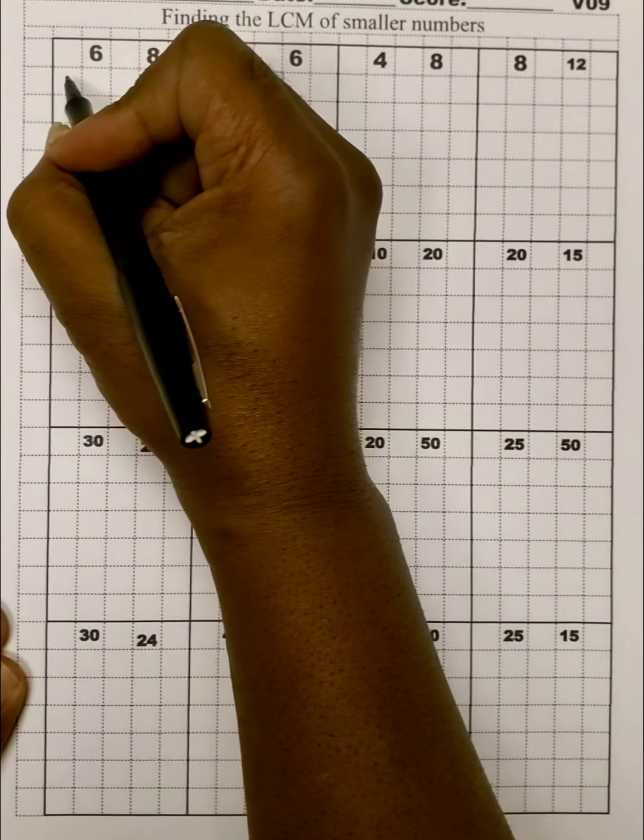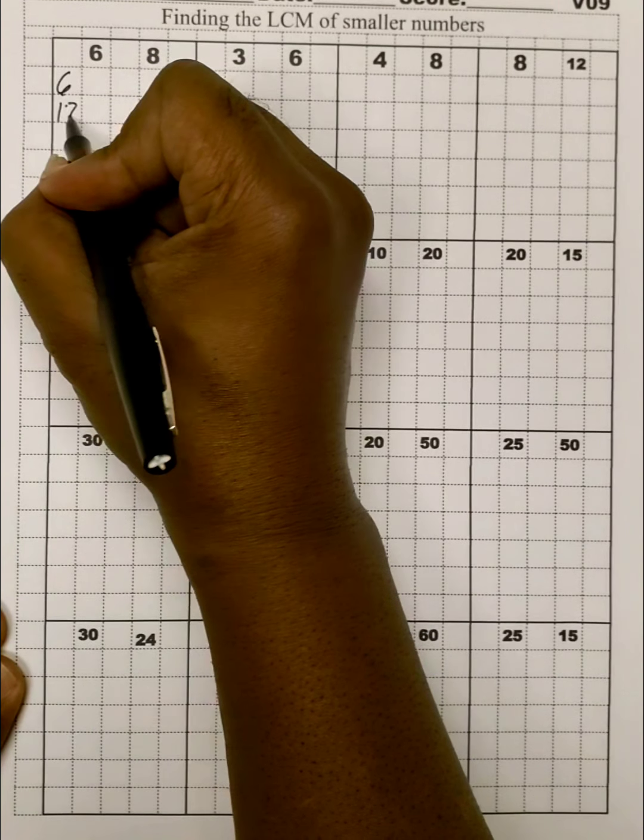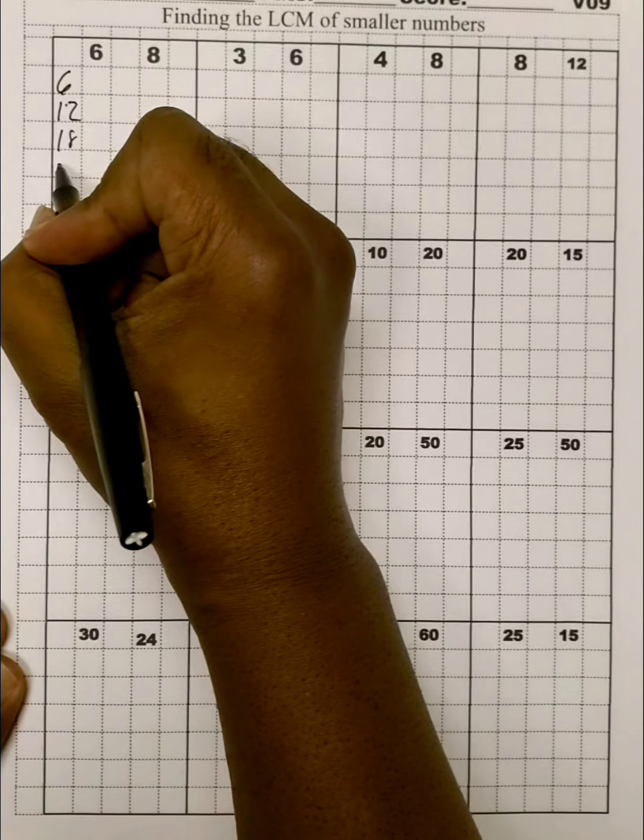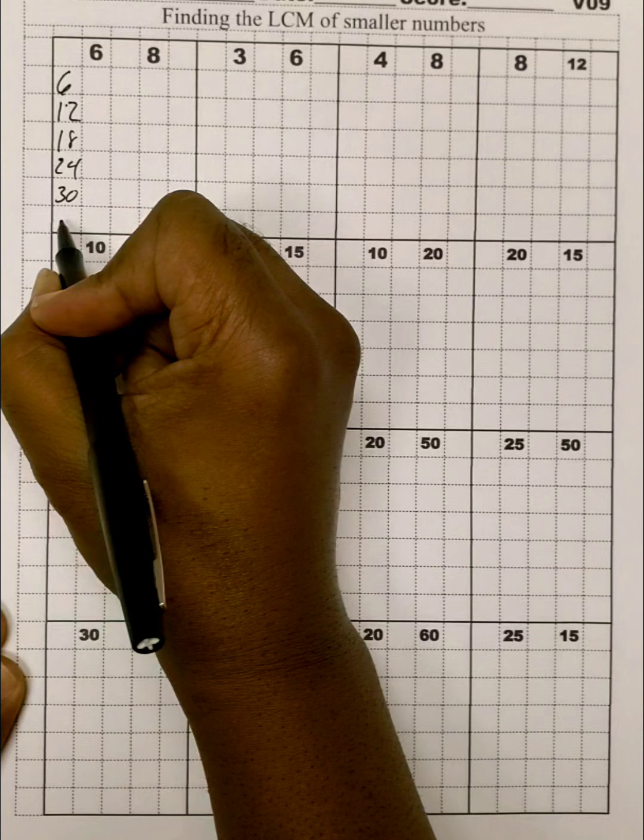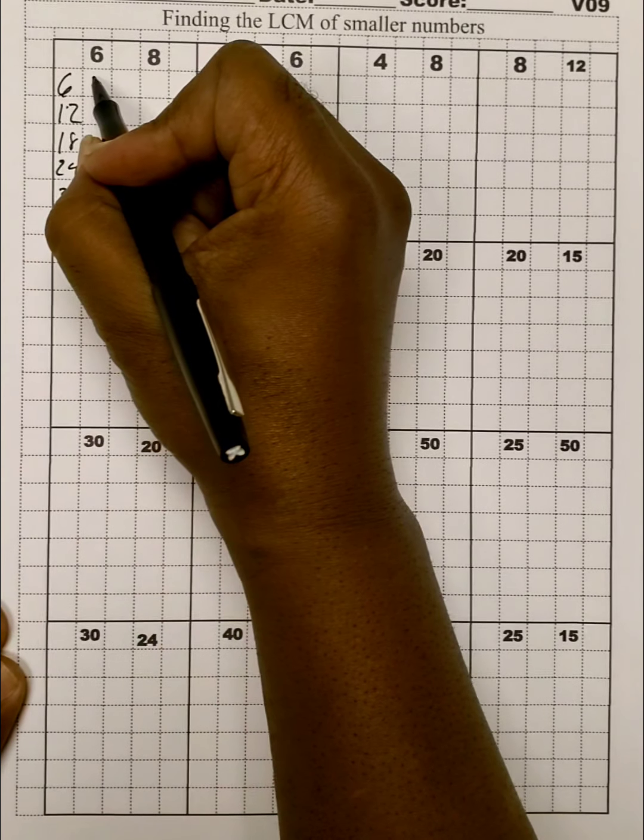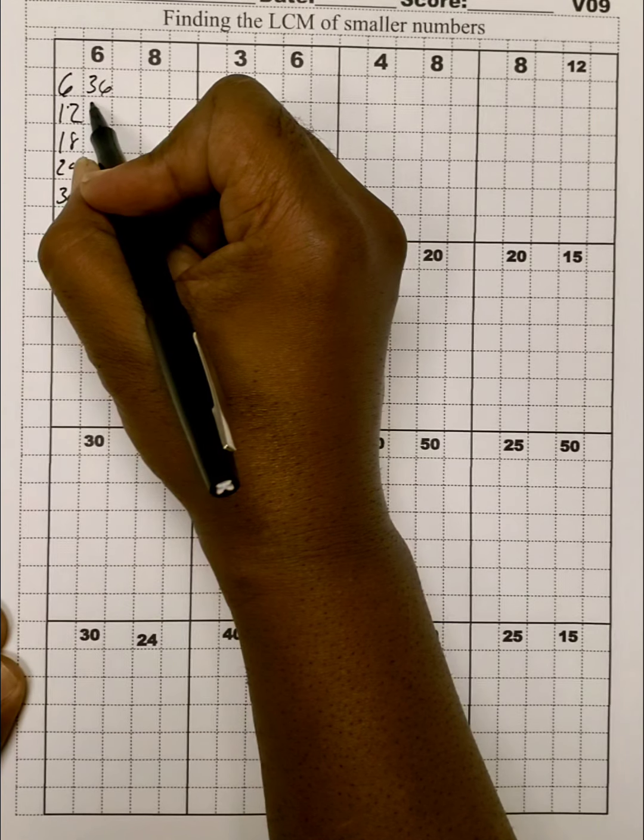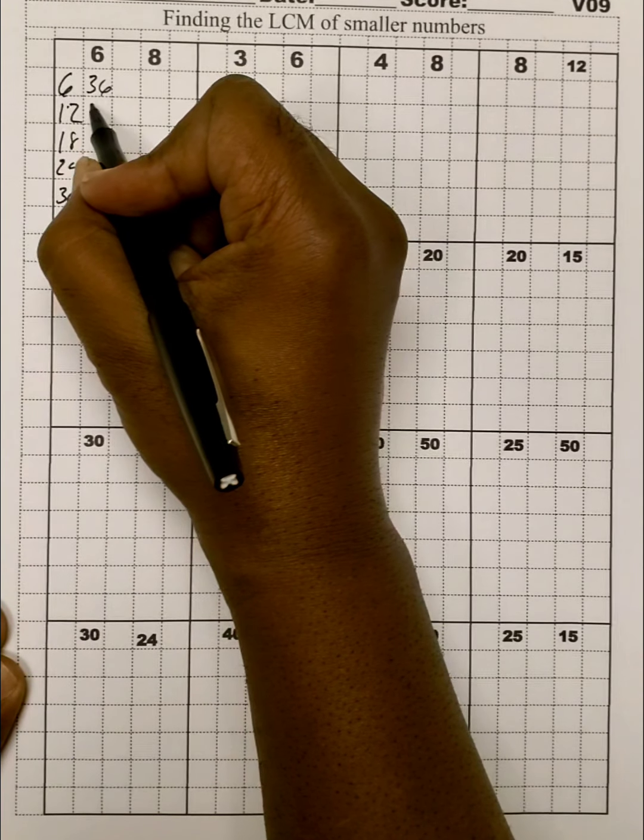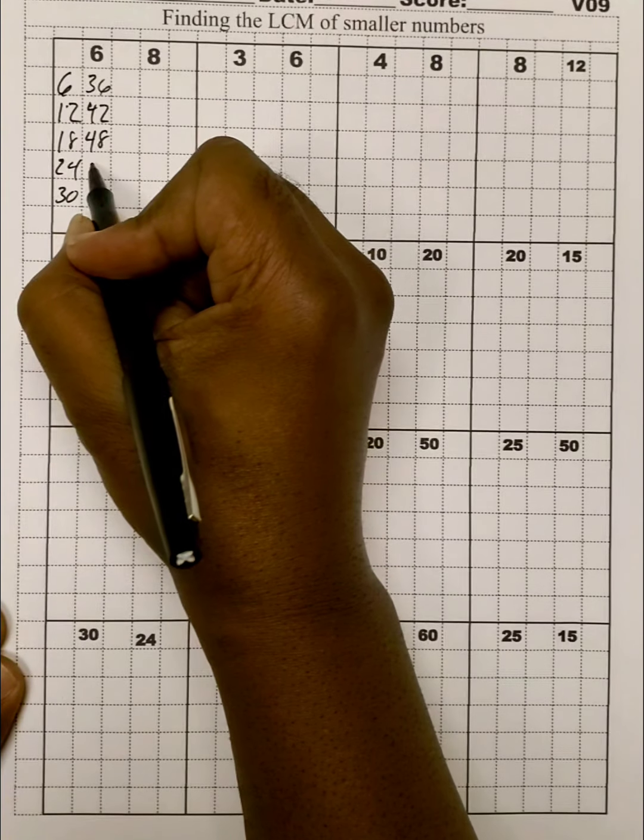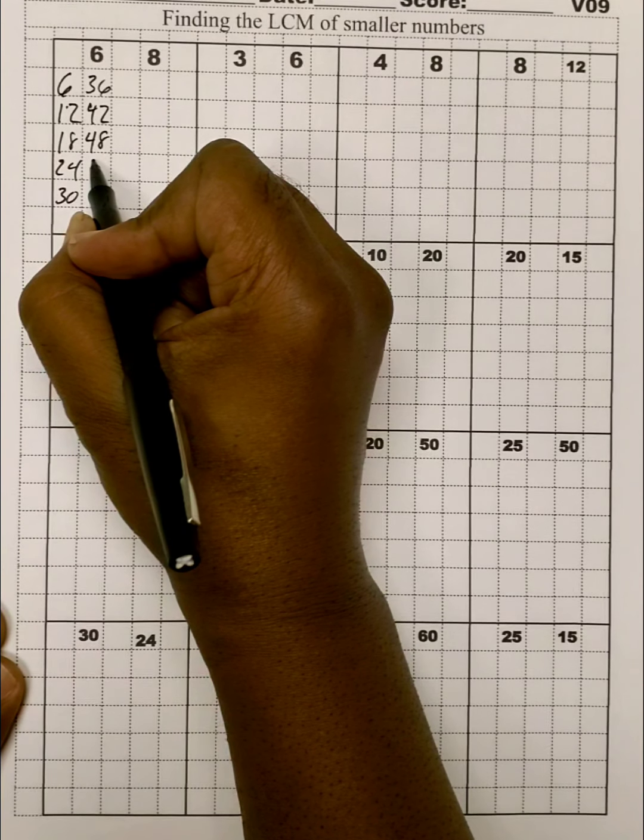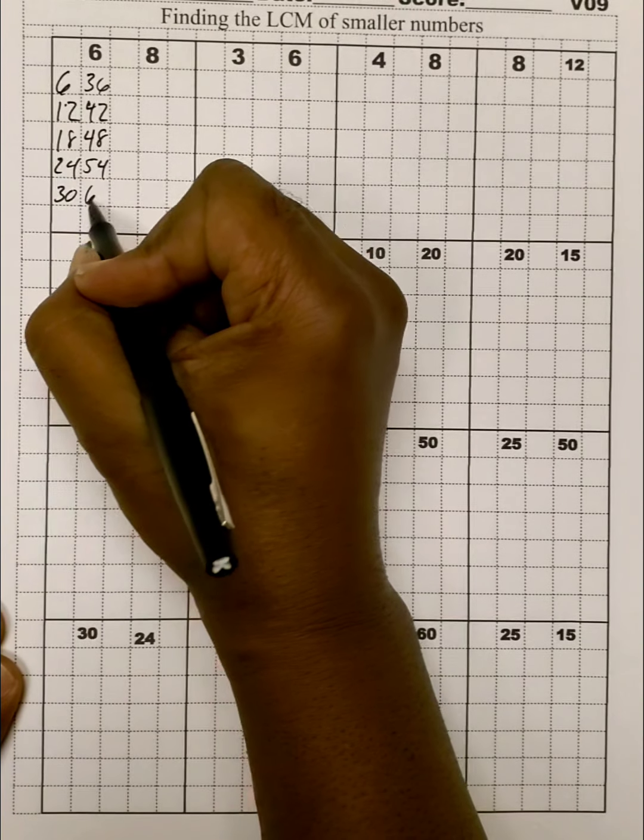And let's see. Six timetables are 6, 12, 18, 24, 30. Let's see, let's go more. 36. And let's see, that's 7 times is 42. Then there's 48, and then there's 54, and then there's 60.